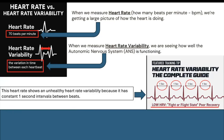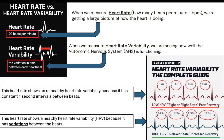This heart rate shows an unhealthy heart rate variability because it has constant one-second intervals between the beats. This means it's a low heart rate variability — it's a fight-or-flight state, and it would have poor recovery. This heart rate shows a healthy heart rate variability because it has variations between the beats. This means they have high heart rate variability; it's a relaxed state with increased recovery possibility.